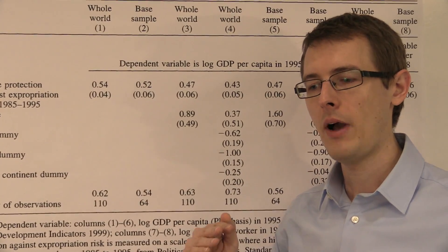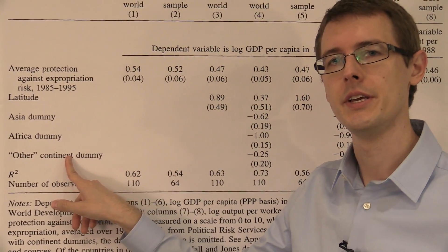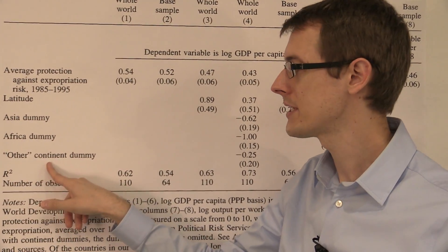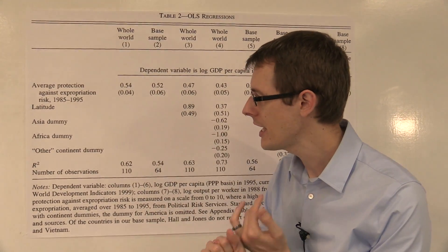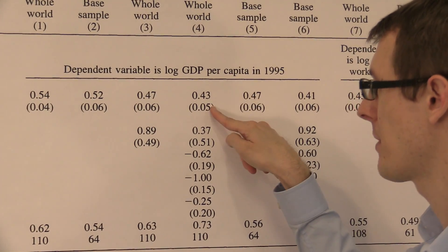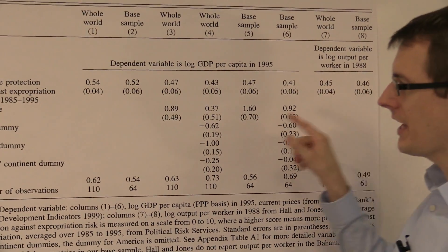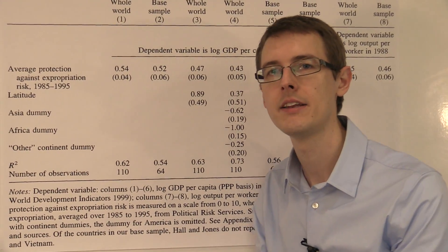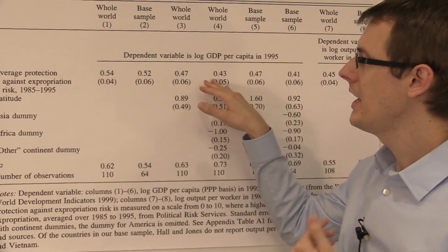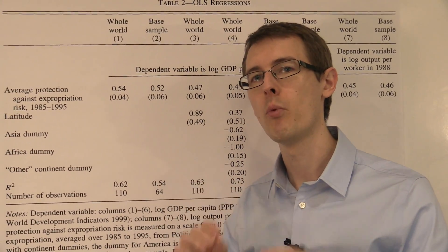You may think that just measuring how close a country is to the equator is a very rough way of defining geography. So they put a few more variables into the equation — for example, are you in Asia, Africa, or some other continent? We see that once you look at countries that are all on the same continent and all close to the equator, there's still a positive relationship between property rights and economic development. The key takeaway from this table is that no matter the specification — whether you look at all countries, countries close to the equator, or countries on certain continents close to the equator — there's always a positive relationship between property rights and economic development.